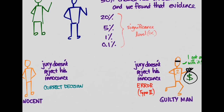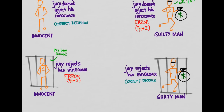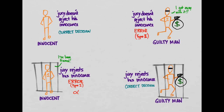Going back to our four scenarios: we call the Type 1 error the alpha error. The probability of committing a Type 2 error — failing to reject a false null hypothesis, failing to reject the court's assumption of innocence when the man is actually guilty — we call that beta, or the beta error.